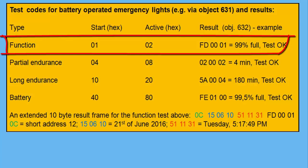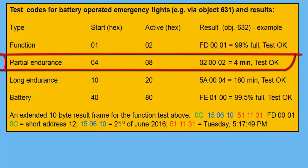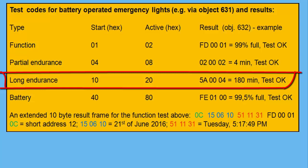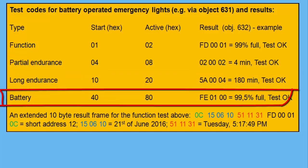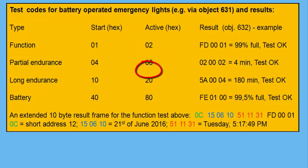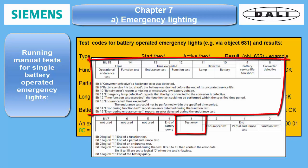Here are the codes: 0x01 (1 decimal) equals function test; 0x04 (4 decimal) equals partial endurance test; 0x10 (16 decimal) equals long endurance test; 0x40 (64 decimal) equals battery test. The return codes are: 0x02 (2 decimal) for function test; 0x08 (8 decimal) for partial endurance; 0x20 (32 decimal) for long endurance; and 0x80 (128 decimal) for battery test. If a test fails, the 3-byte result telegram also mentions this.